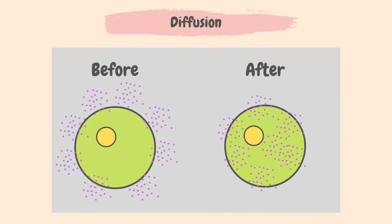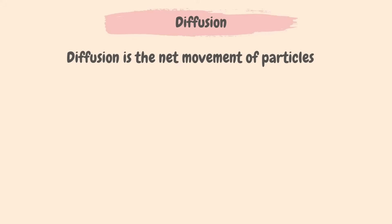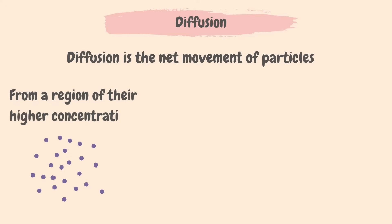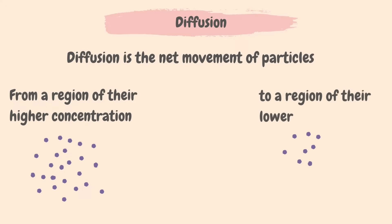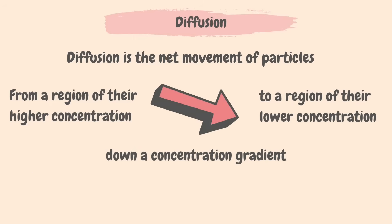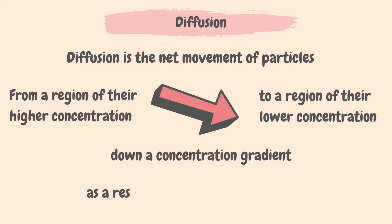For example, this diagram demonstrates a cell surrounded by nutrients, shown by the purple dots. We can see that on the left, there are a lot more nutrients outside the cell than inside. By diffusion, the nutrients will move into the cell from higher to lower concentration until the number of nutrients inside and outside the cell are balanced. Therefore, diffusion is the net movement of particles from a region of higher concentration to a region of lower concentration — that is, down a concentration gradient — as a result of their random movement. It is the constant random movement of particles and their kinetic energy that allows diffusion to occur.